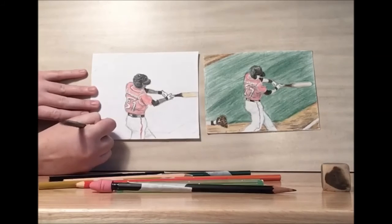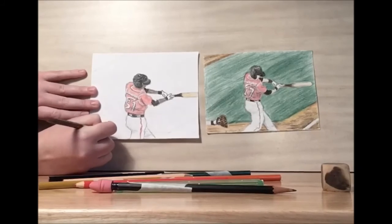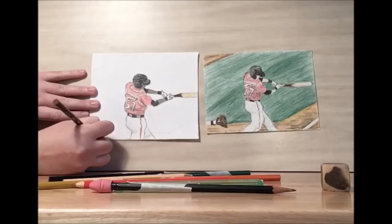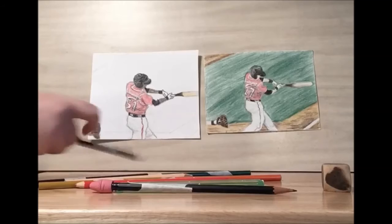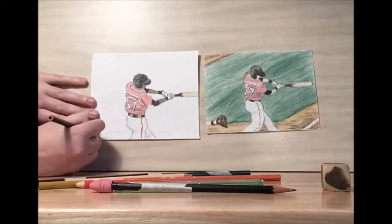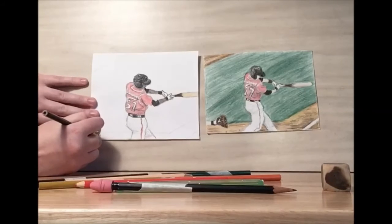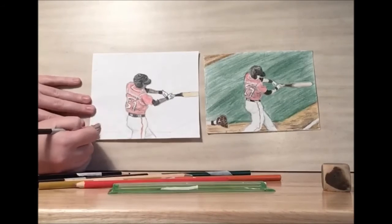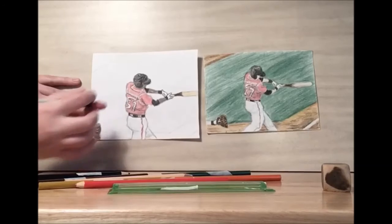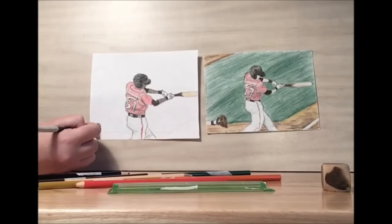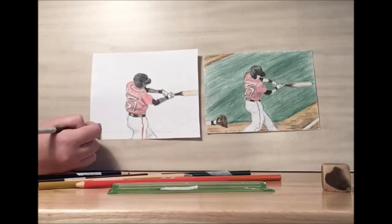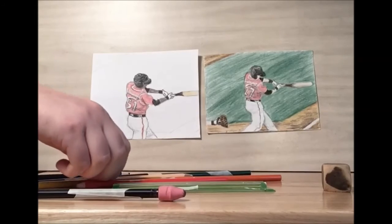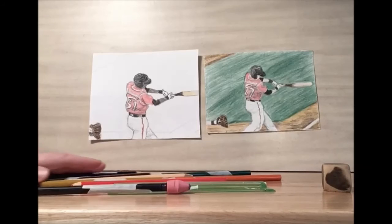Then add in some lines. And I'm going to draw in the black of the glove. There you have our catcher's mitt. Now you can do watercolors for this next step.